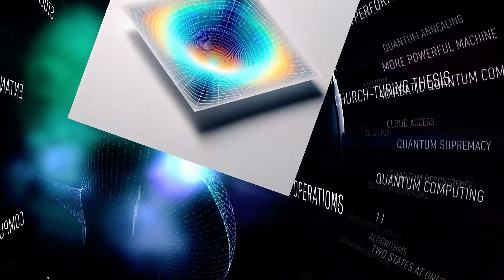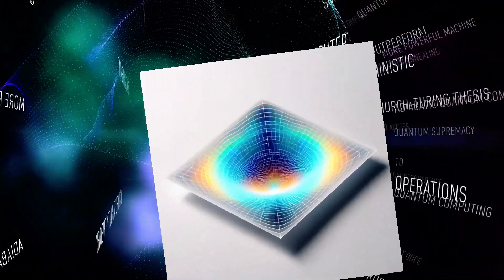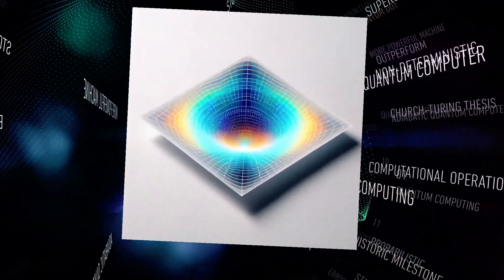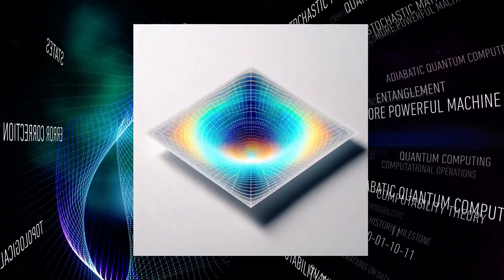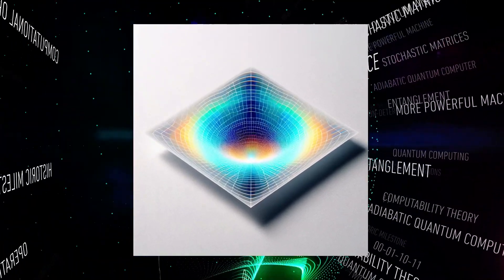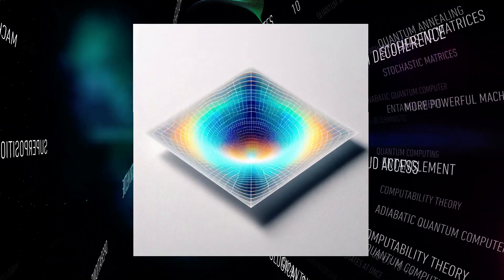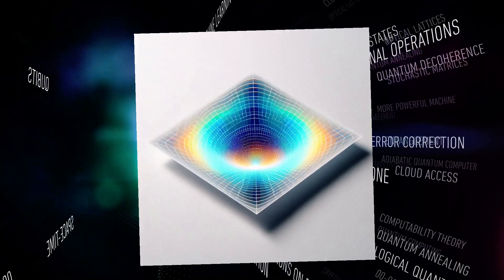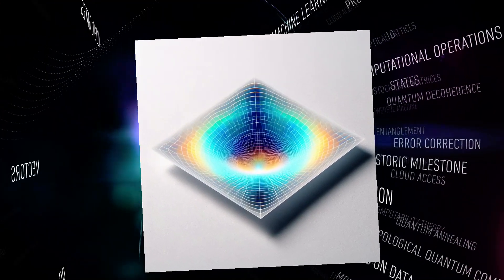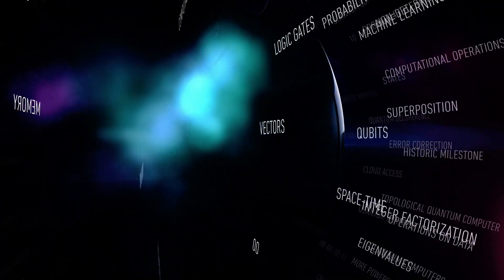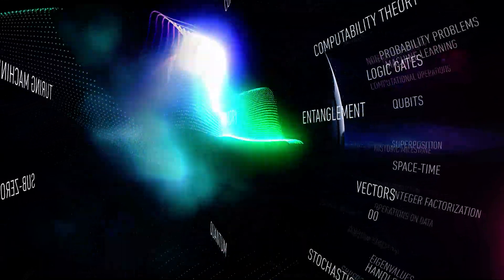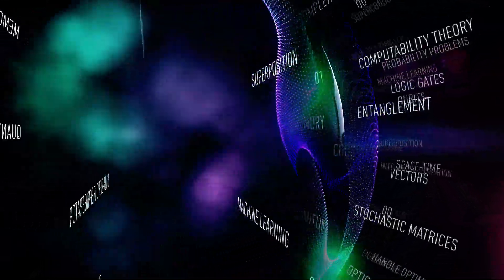A hologram is a thin film that records the interference pattern of a laser beam. When the film is illuminated by another laser beam, it produces a three-dimensional image that looks like the original object. The hologram is a two-dimensional surface that contains all the information about the three-dimensional object.